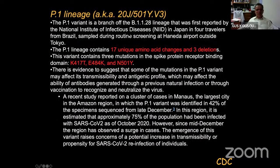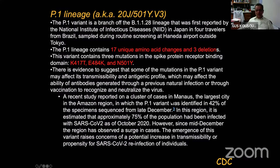The third variant mentioned by the CDC is the P.1 lineage, which has 17 unique amino acids and three deletions with these mutations. There is no current evidence suggesting P.1 mutations affect transmissibility, but a recent study reported a cluster of cases in Manaus, the largest city in the Amazon region, where approximately 75% of the population was estimated to have been infected with SARS-CoV-2 as of October 2020. This high level of infectivity may have led to this variant being selected much more quickly.